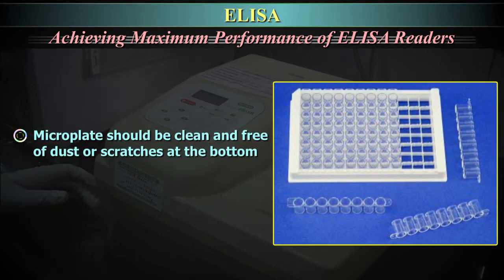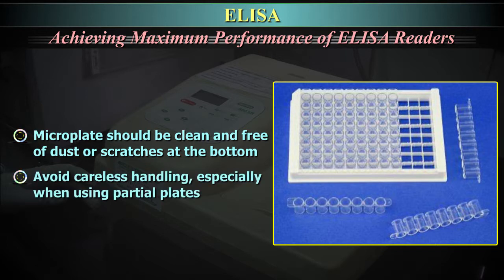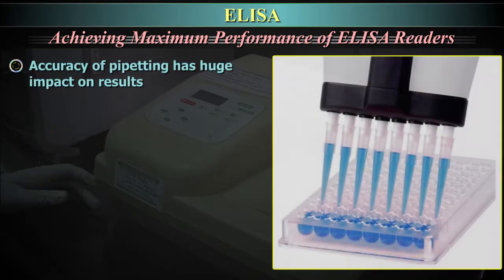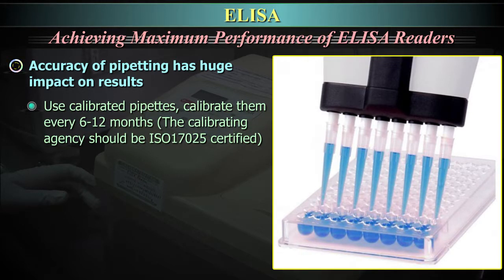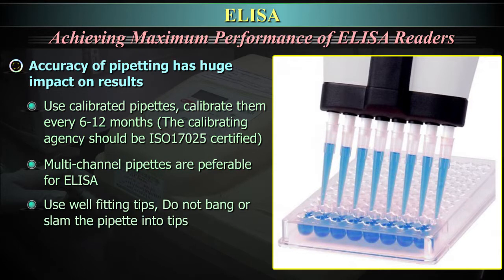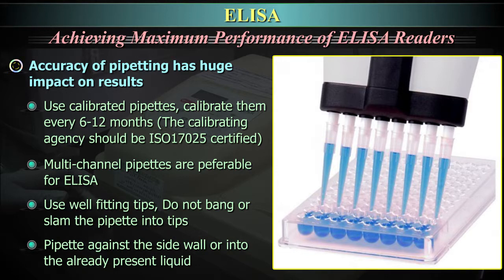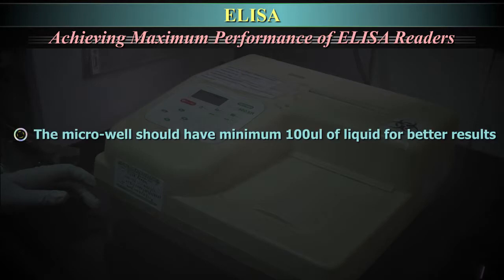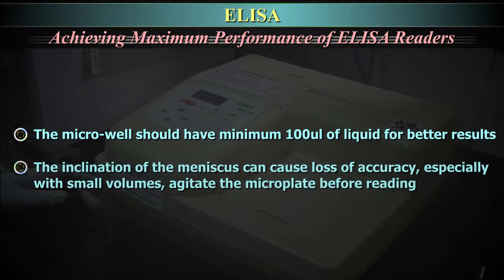Microplates should be clean and free of dust or scratches at the bottom. Avoid careless handling, especially when using partial plates. Accuracy of pipetting has a huge impact on the results. Use calibrated pipettes and calibrate them every 6-12 months. The calibrating agency should be ISO 17025 certified. Multi-channel pipettes are preferable for ELISA. Use well-fitting tips; do not bang or slam the pipette into the tips. Pipette against the sidewall or into the already present liquid. The micro-well should have a minimum of 100 microlitres of liquid for better results. The inclination of the meniscus can cause loss of accuracy, especially with small volumes; agitate the microplate before reading.